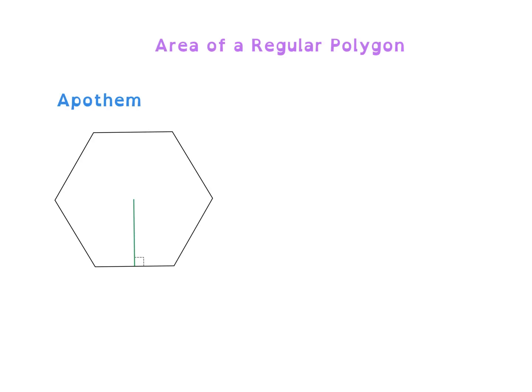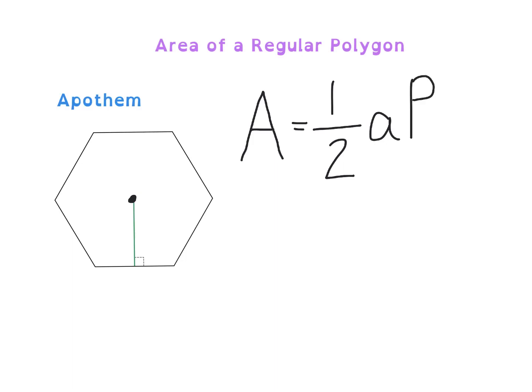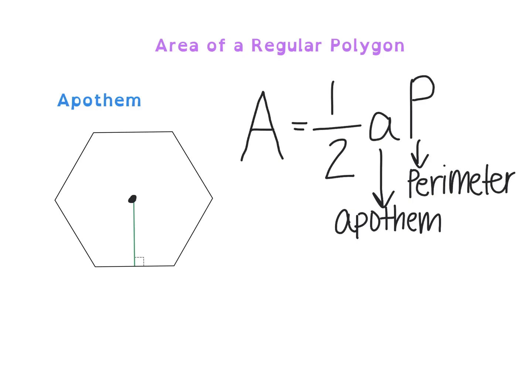The apothem is going to be the distance from the center of the polygon to any of the sides, but it has to be perpendicular to the sides, creating a 90-degree angle. The reason the apothem is important is because we need it when calculating the area for a regular polygon. The area formula is one-half of the apothem times the capital letter P, which represents the perimeter of the polygon.